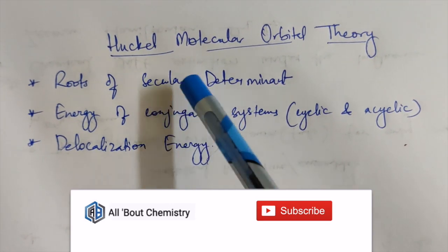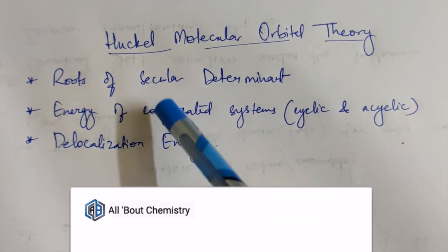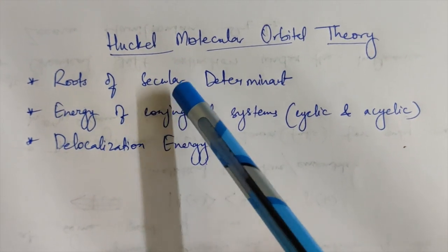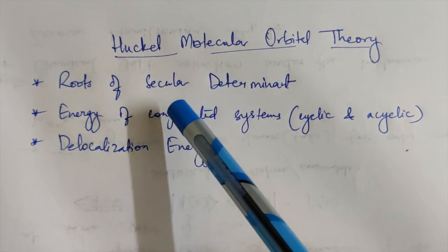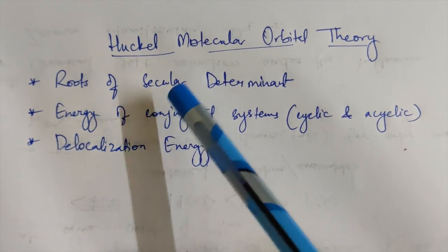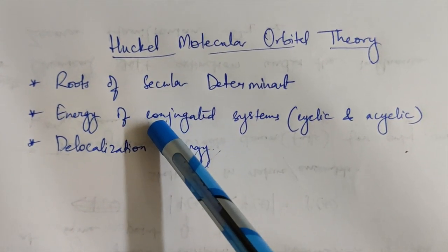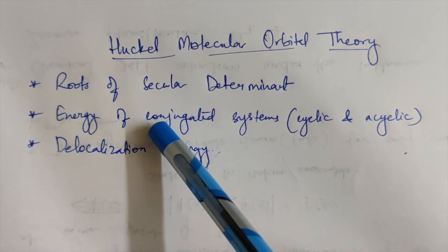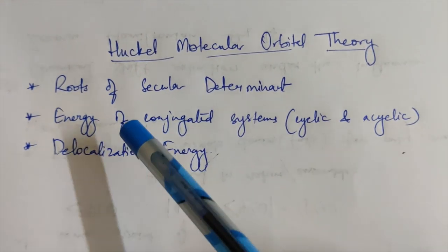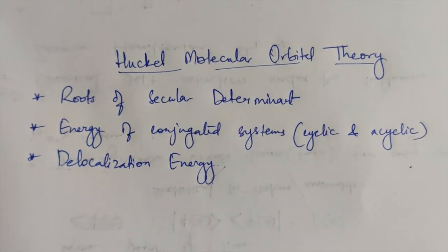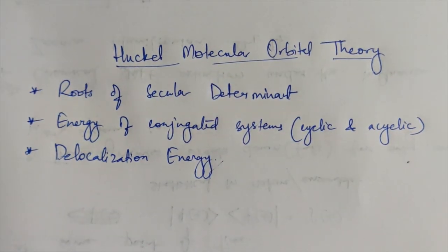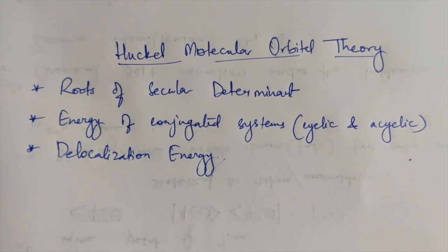For now, these two things you are going to learn: how to find them from Hückel Molecular Orbital Theory for your acyclic (linear) system as well as your cyclic system. So let's start — take out your notebook and make note of all these tricks which I am going to share with you today.